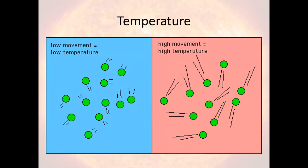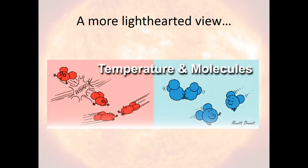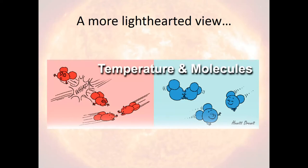To reiterate: when an object has a cold temperature, the molecules making up that object are moving very slowly. On the other hand, when an object is really hot, those molecules are moving really fast. In a more lighthearted view, when an object is warm, the molecules are bouncing and bumping off each other going really fast. When the object is cold, the molecules are gliding by slowly — but they do move slower.